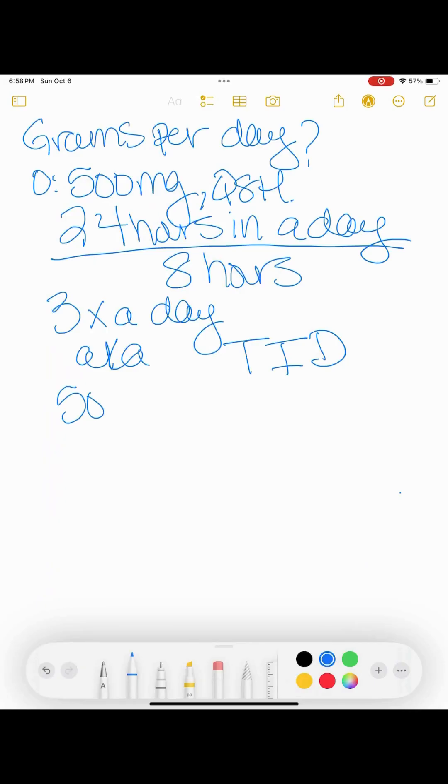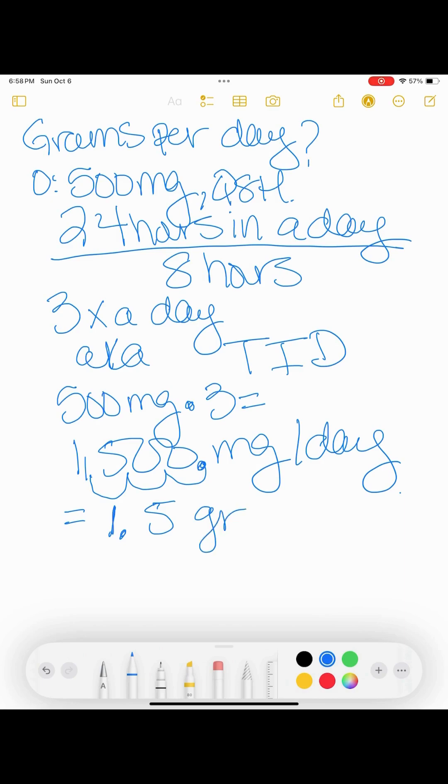So the first one's pretty simple. If we have 500 milligrams every eight hours, how many doses essentially are, like how many times a day is this person getting their medication? And there's 24 hours in a day, you divide that by eight, that's three times a day. That's also, so that's three times a day, AKA TID. So 500 milligrams times three equals 1,500 milligrams per day.